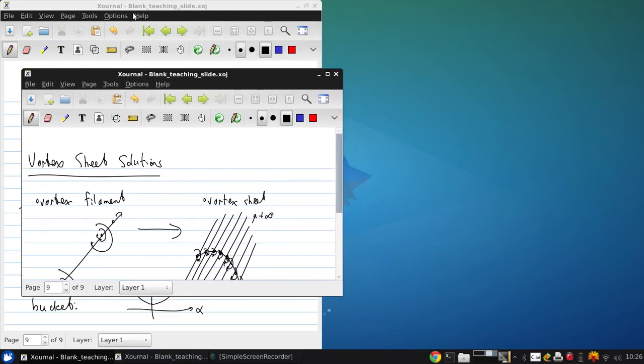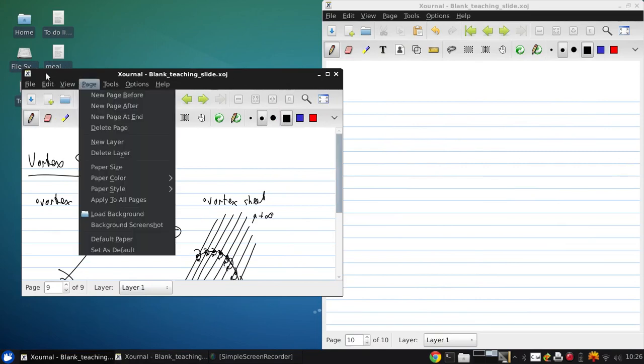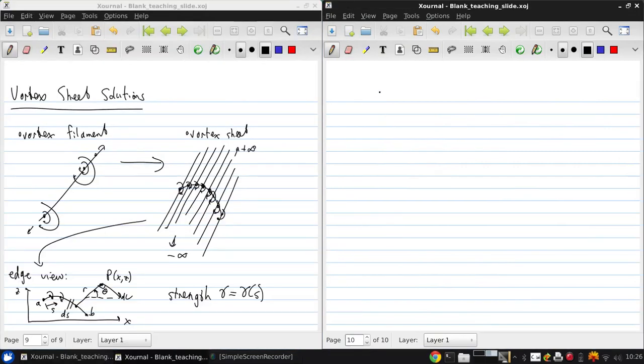Now if we try to put this picture together in terms of the velocity potential, we get that the velocity potential is negative one over two pi times the integral from A to B. This is a very important equation for the Vortex Panel Method.